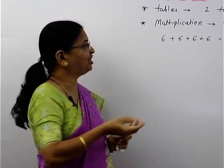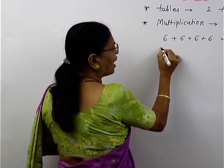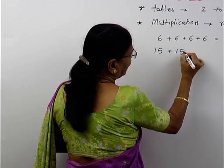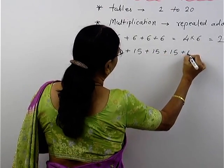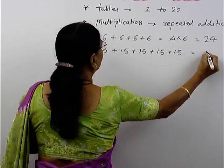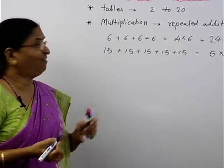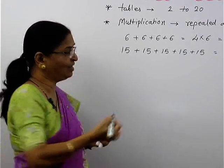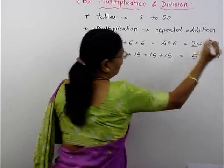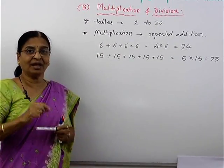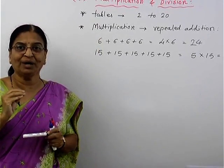It can be a single digit number or a double digit number also. For example, if you want to find 15 plus 15 plus 15 plus 15 plus 15 — that is 15 added 5 times — then I will suggest you do it as 15 multiplied by 5. When you know the table of 15, you can write the answer, which is 75. So the first thing to remember is the meaning of multiplication.